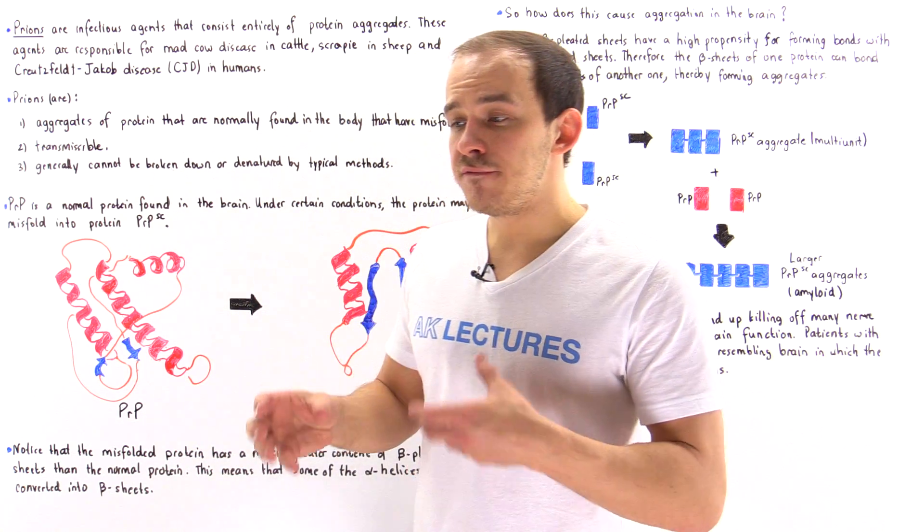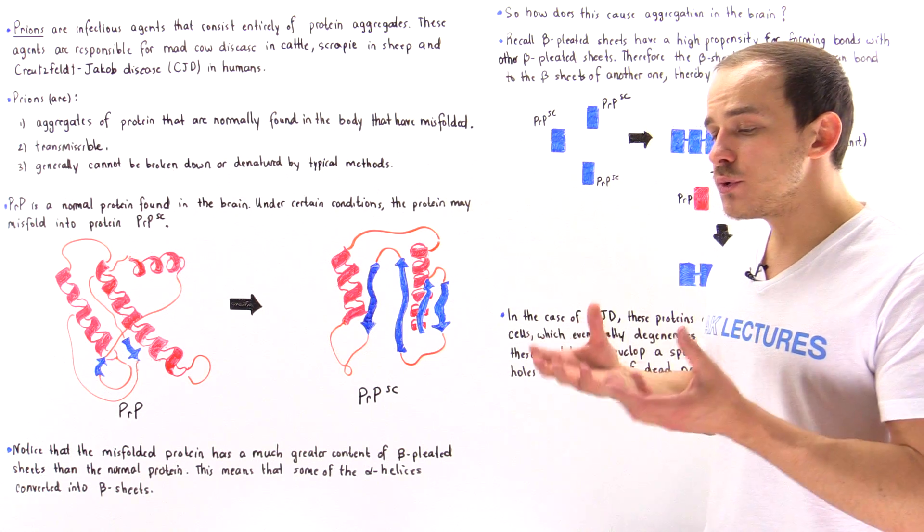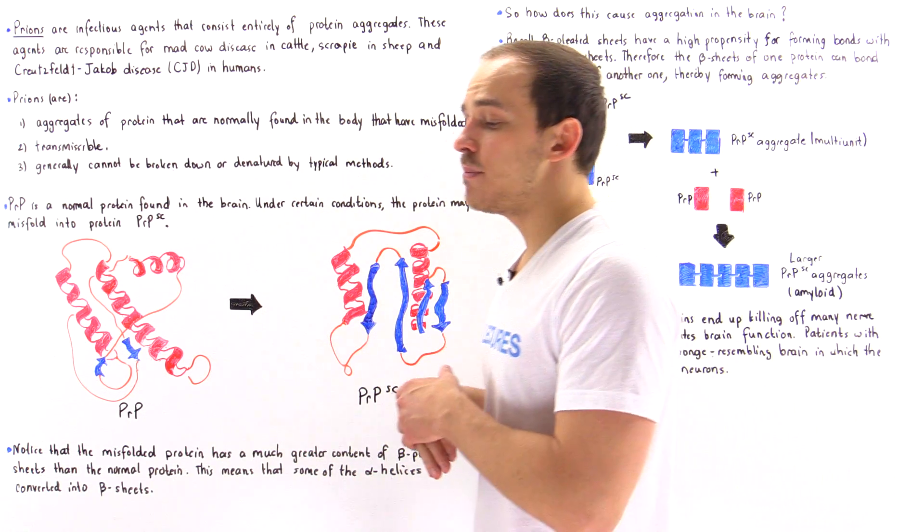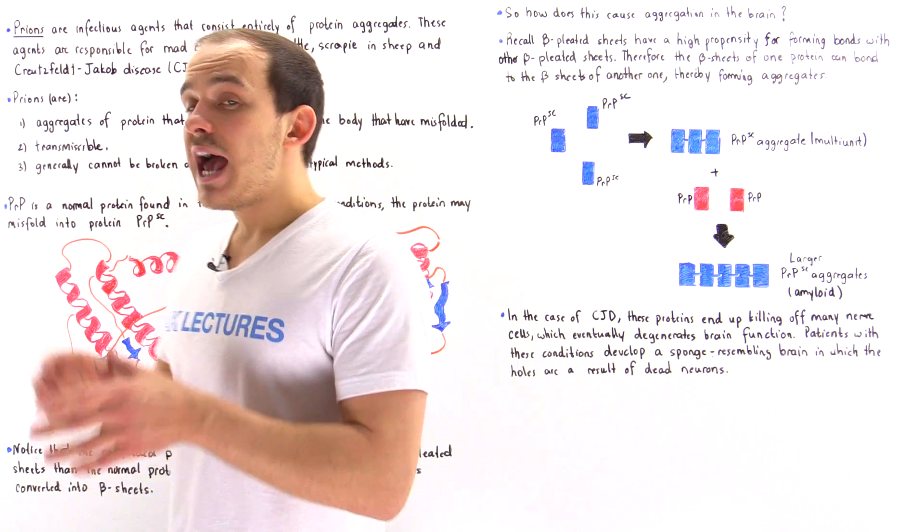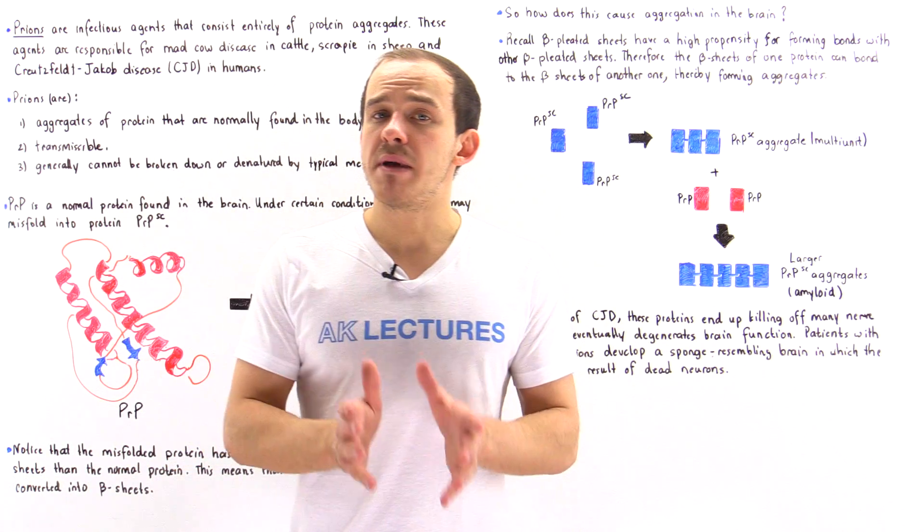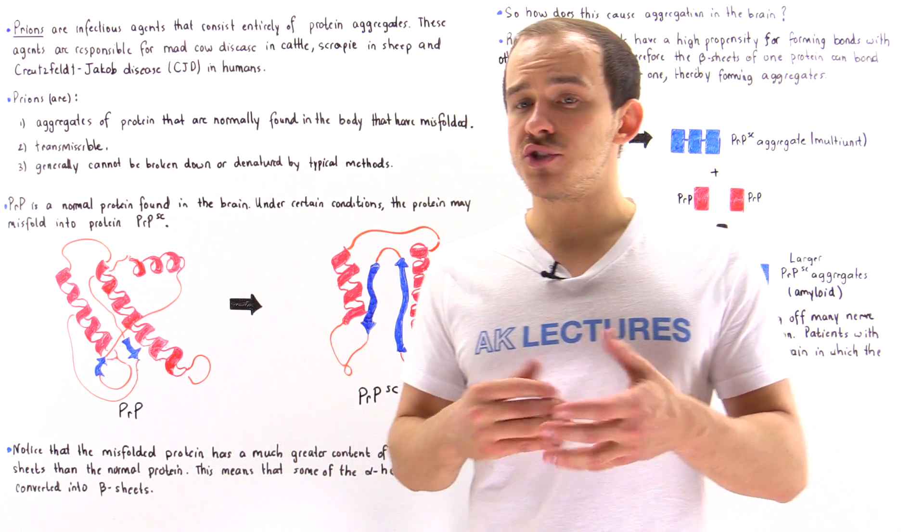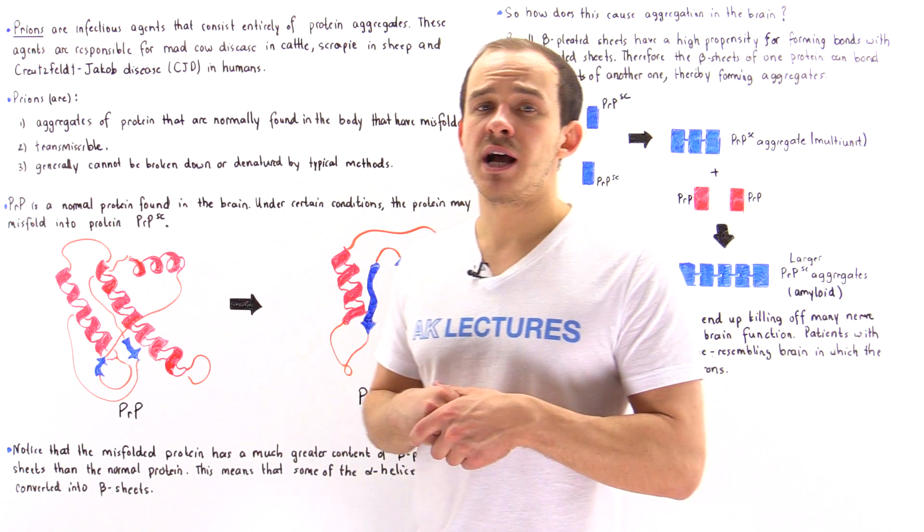Normally, if it folds incorrectly, the final three-dimensional structure of that polypeptide will not be correct. Because it's the three-dimensional structure of the polypeptide that determines its function, the function of that final misfolded protein will not be the same.